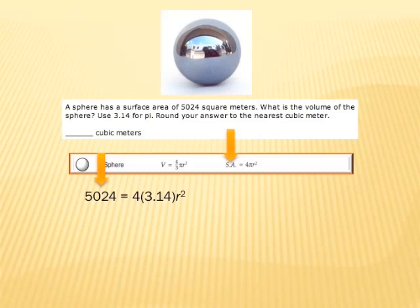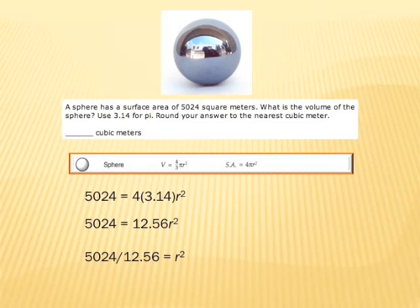Instead of saying surface area equals 4 times radius squared, we can say 5,024 equals 4 times pi times the radius squared. After multiplying 4 times pi and then dividing 5,024 by 12.56, we see that the square of the radius is 400.